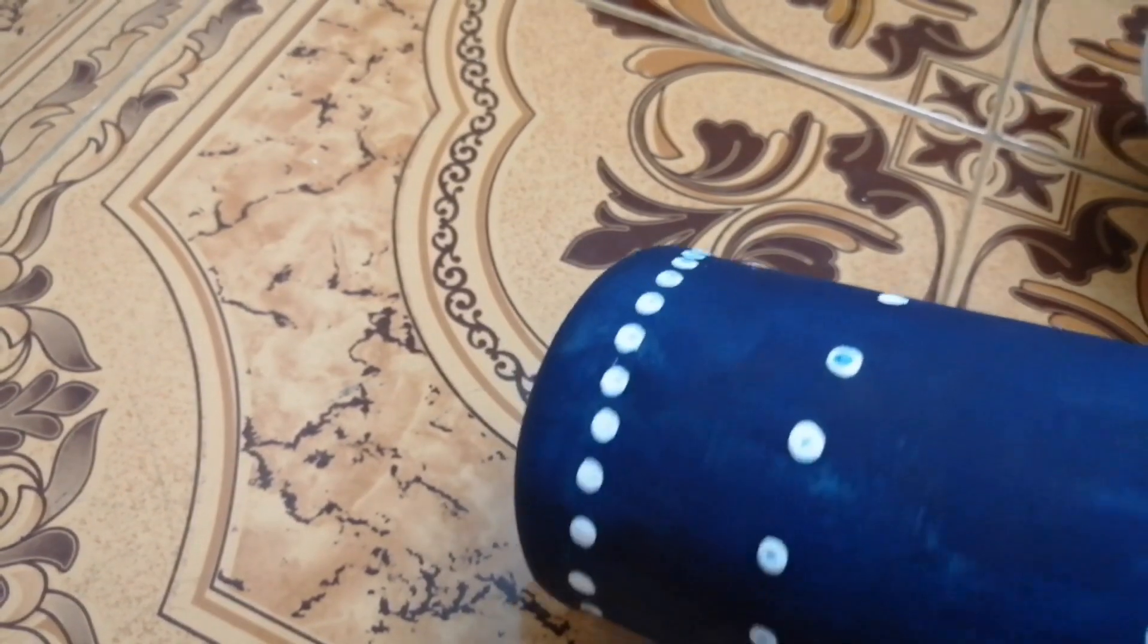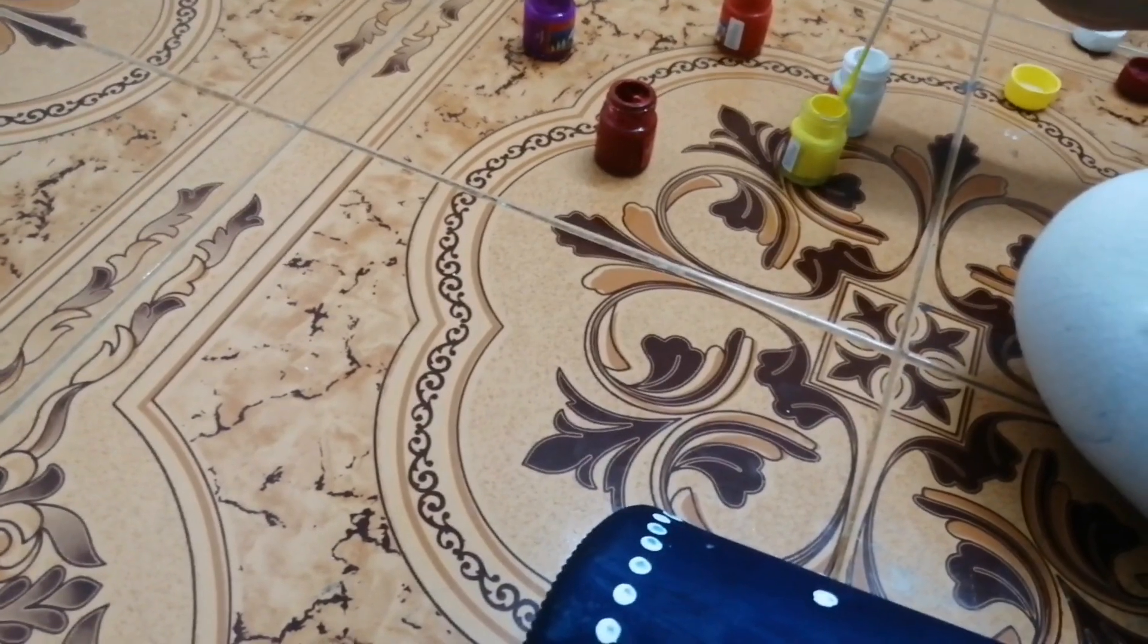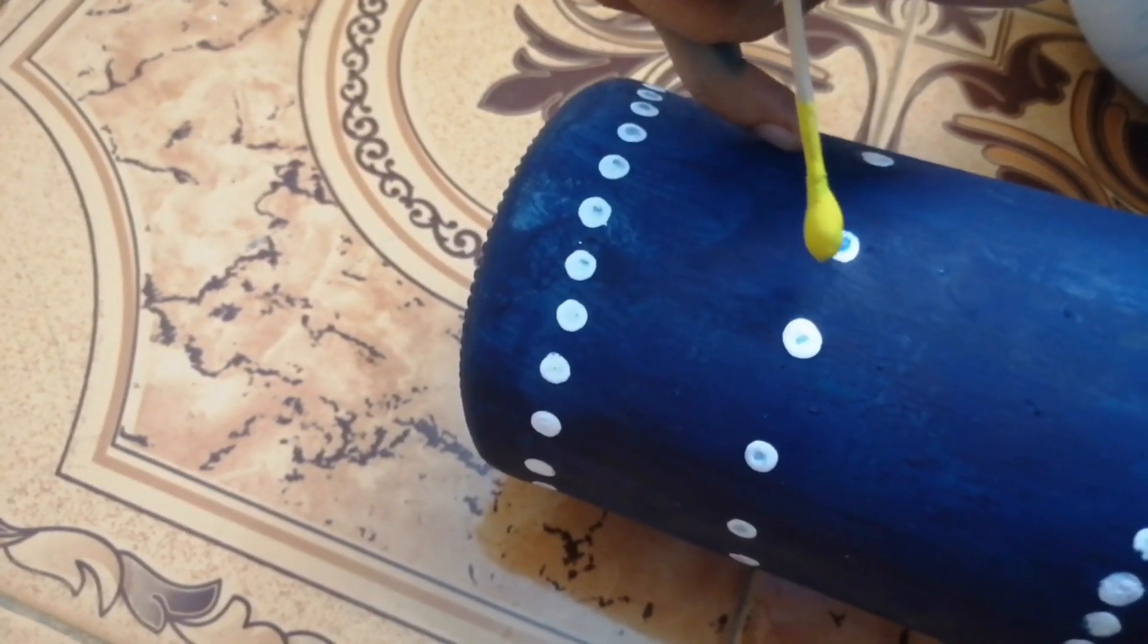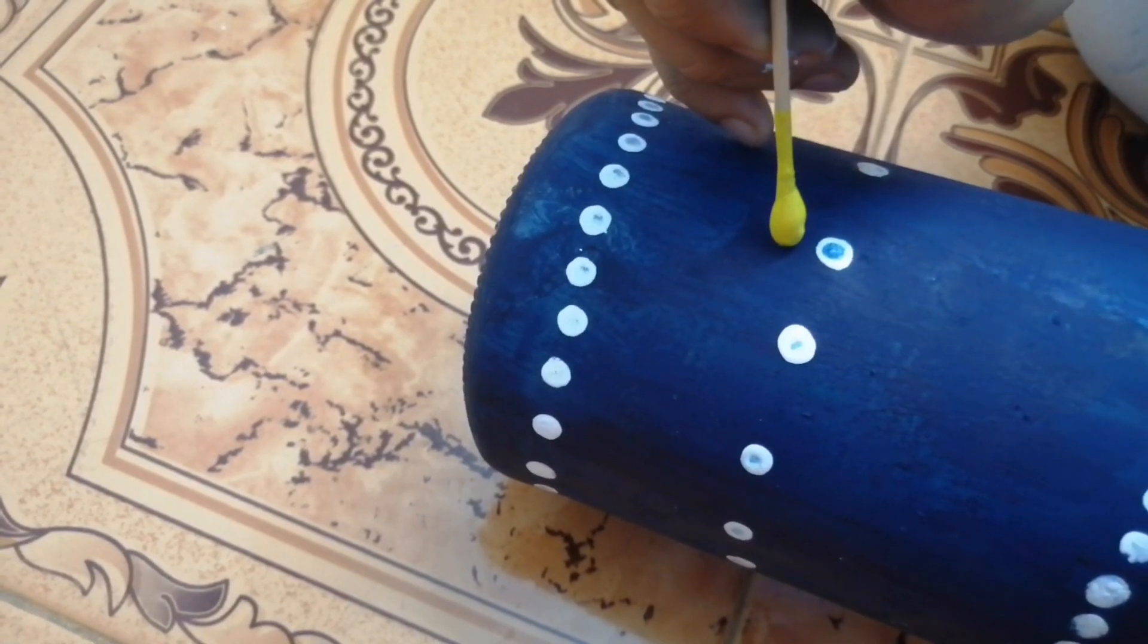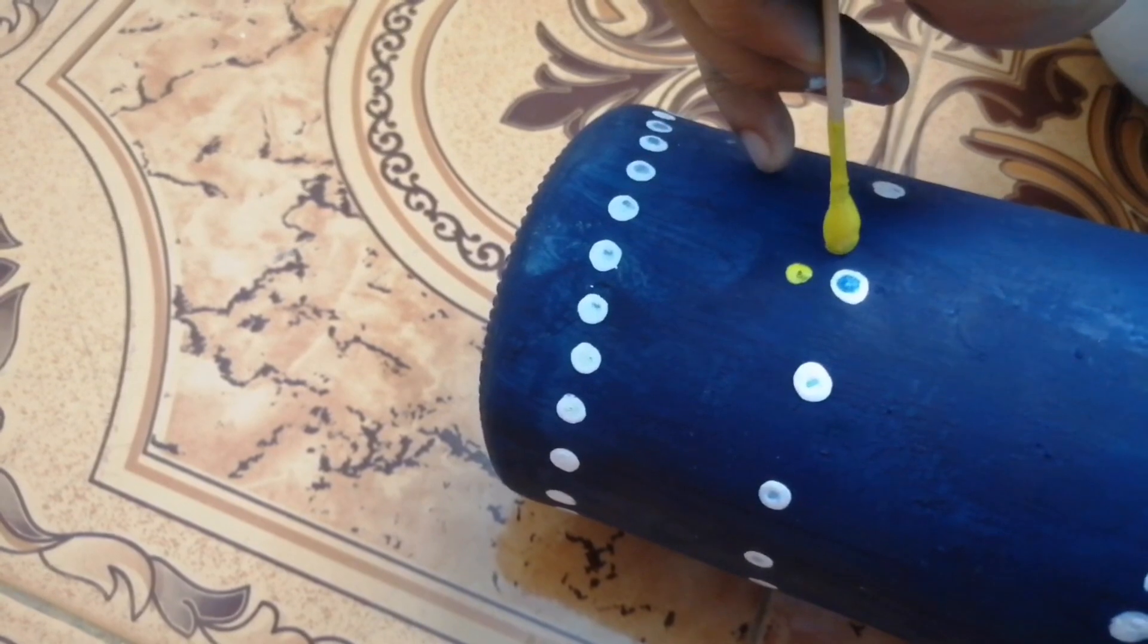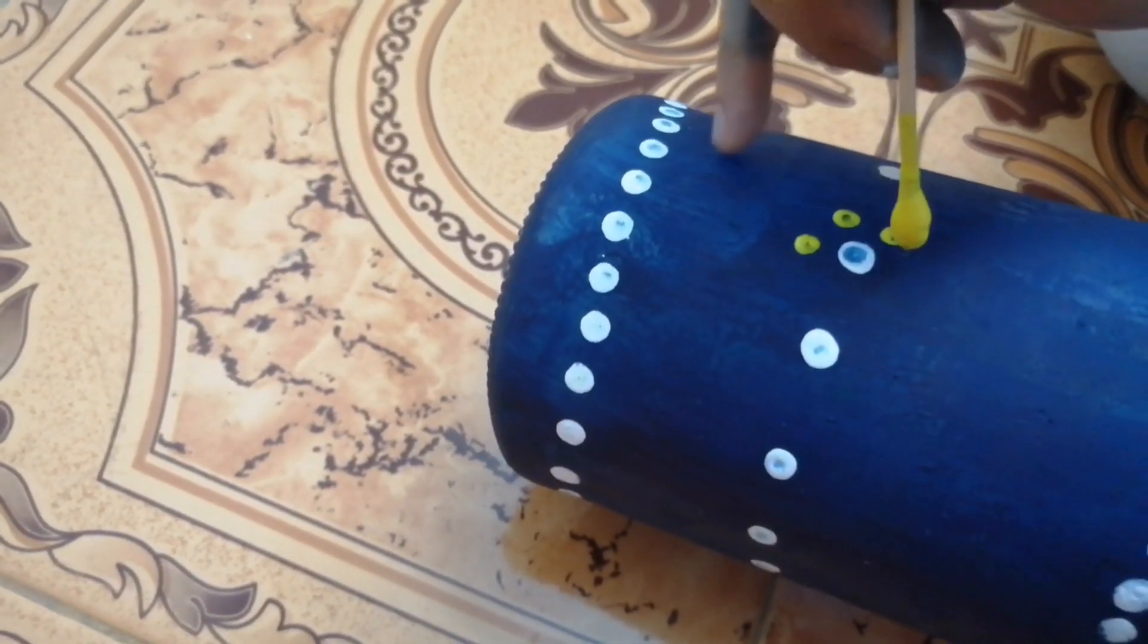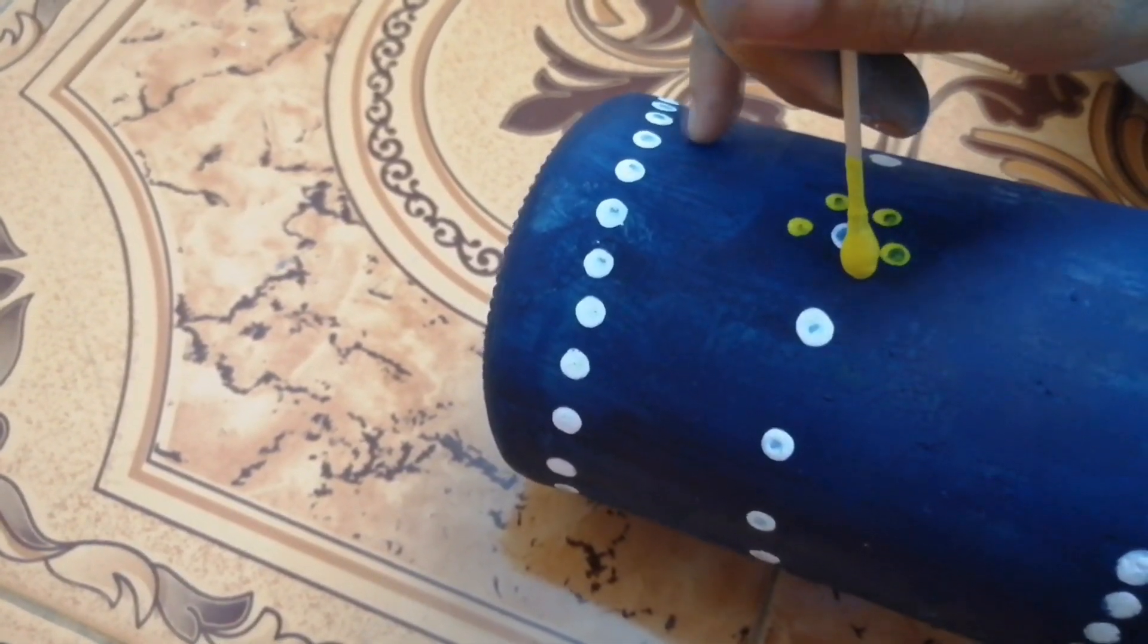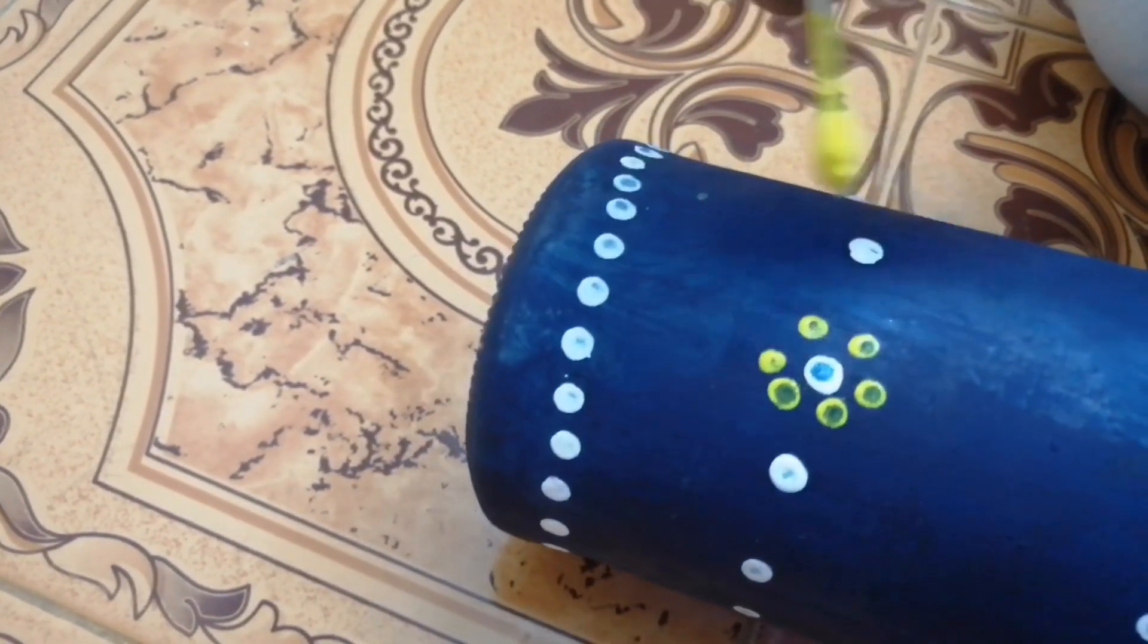The next step is to take another ear bud and dip it in yellow paint. In the outer portion of the white paint we have to apply dots. Now I made a flower.